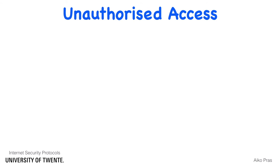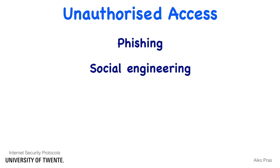A brute force attack to guess passwords is just one way to get unauthorized access. Other ways to get login credentials is to perform phishing or social engineering attacks. Once the attacker has access, he may install a rootkit or a backdoor to allow later login attempts.